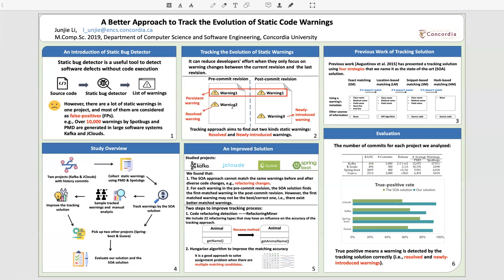Warning two only appears in pre-commit, so we name it as resolved warning. By contrast, warning three we name it as newly introduced warning. Tracking approach aims to find out resolved and newly introduced warnings.